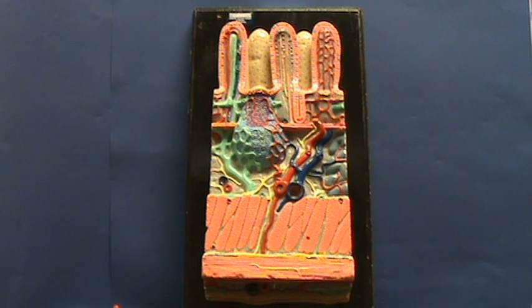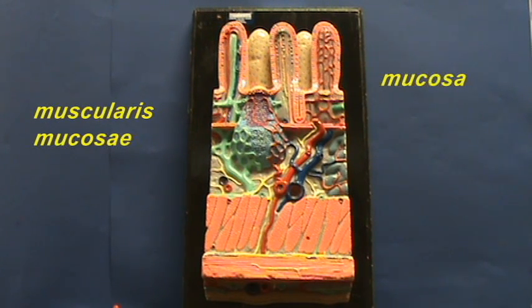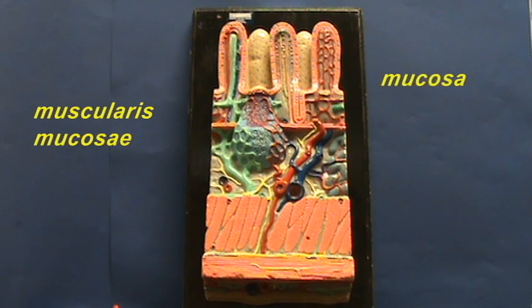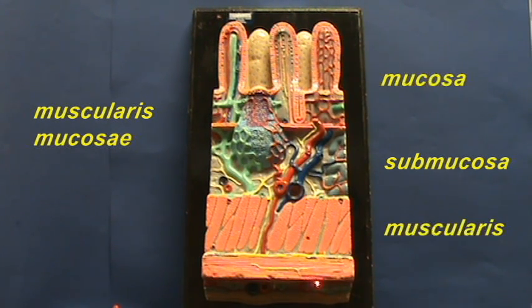You can divide the wall of the gastrointestinal tract into four basic layers. The deepest layer, which lines the lumen, is the mucosa. It begins at the muscularis mucosae and extends upward, and it can vary depending upon where in the gastrointestinal tract you're looking. The layer underneath the mucosa, which has large blood vessels, glands, and lymphoid nodules, is referred to as the submucosa. The next layer, where you have smooth muscle, is the muscularis layer. And then finally there is a thin layer on the outside, which is going to form the serosa.